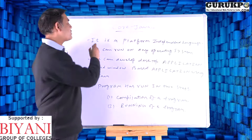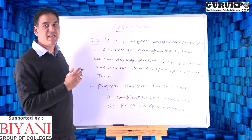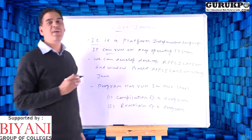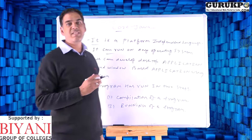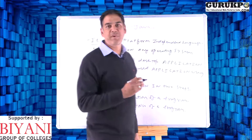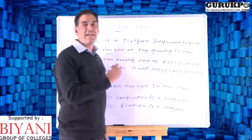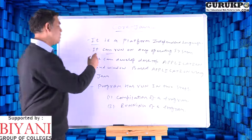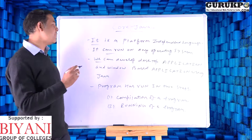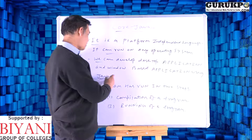What is Java basically? First of all, we should know that Java is a platform-independent language. Platform-independent means it is not dependent on a particular operating system. We can say that it can run on Windows, Unix, Linux, Macintosh — any kind of operating system. So we can say that it is used to develop desktop applications and window-based applications using Java technology.